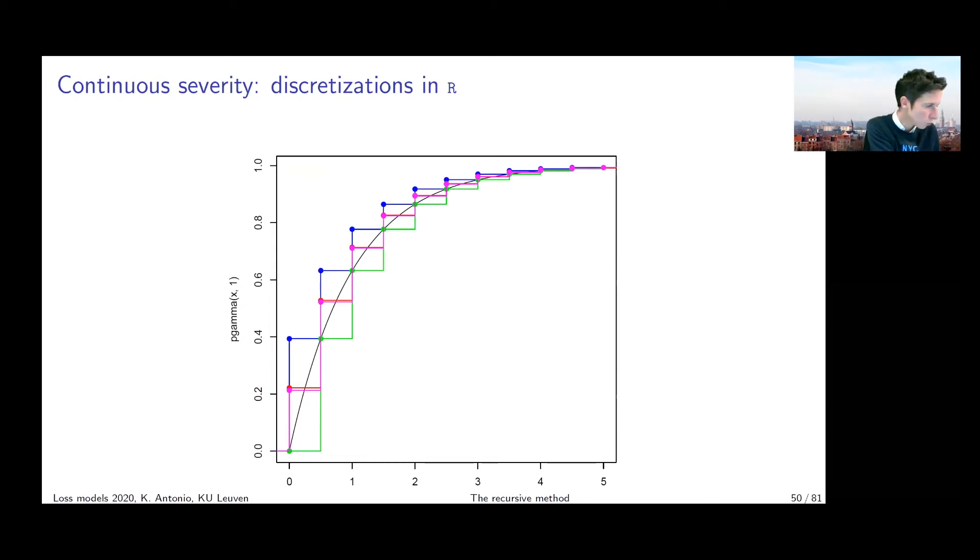To do the local moment matching. So you see that you're capable of discretizing this gamma distribution, and once you have this discretized version, you're now ready to run, for example, the Panjer recursion to get the distribution of compound sum S where the terms follow a gamma distribution which you arithmetized, which you approximated with this local moment matching technique.